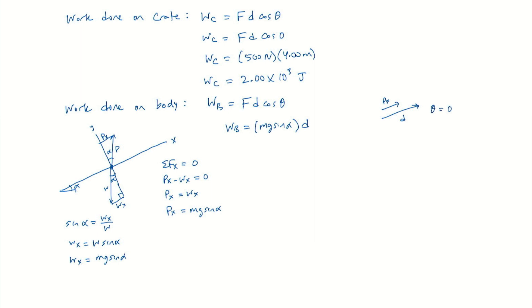And we can see that the PX is up the ramp. The displacement is up the ramp. And so our theta is zero degrees. So we have cosine zero degrees. So the work done on the body is going to be mg sine alpha times D.